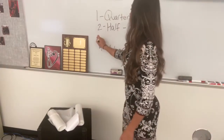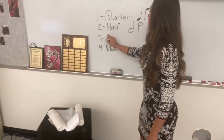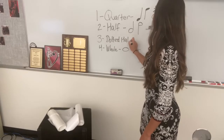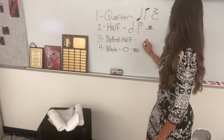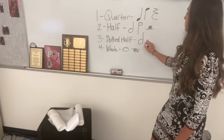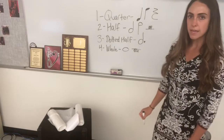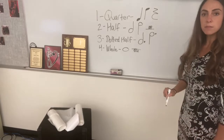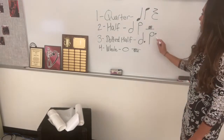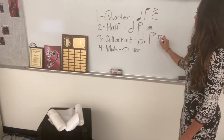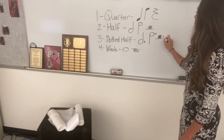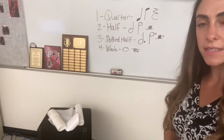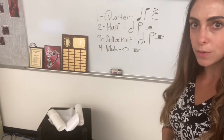Now some of you might be wondering: what about three beats? To create a note worth three beats, we draw a dotted half note — that's a half note with a little dot right next to it. Take a second to draw it. If we flip it upside down it's the same thing, just like if you were flipped upside down you'd still be the same person. A dotted half rest, although not super common, looks like that — we can't flip it upside down because that would turn it into a whole rest.